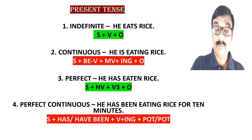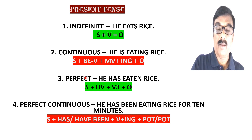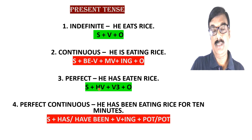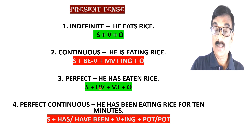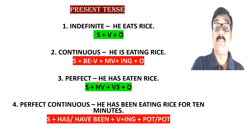Next is present perfect tense. When an action takes place in the present time but is already over and we are enjoying its result, we use present perfect tense. The structure is: Subject + has/have + V3 (third form of the verb) + object. So: 'He has eaten rice' is the example of present perfect tense.